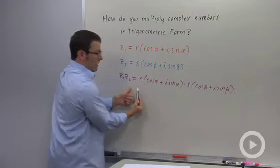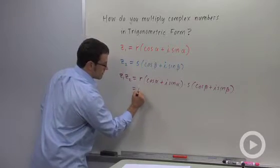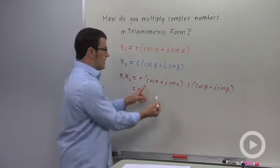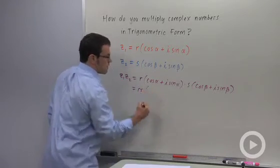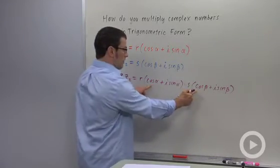I'm going to collect the two moduli out in front, R times S, and then these two guys I have to multiply together. So I'm going to get cosine alpha cosine beta.